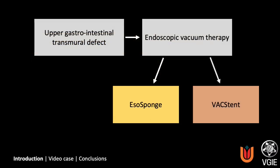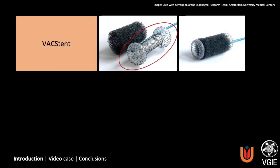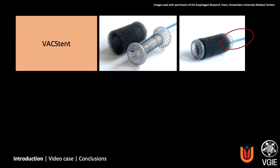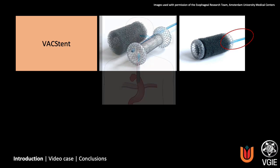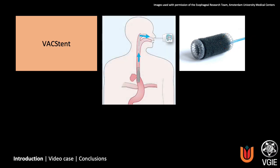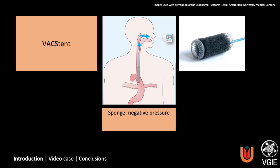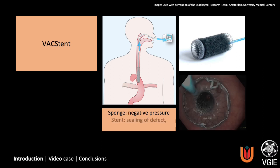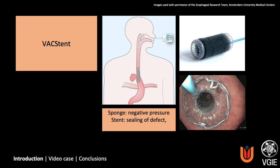Recently, the VaxStent was introduced as a new treatment option for these defects. The VaxStent consists of a covered nitinol stent with a polyurethane sponge attached to the outside and a suction catheter. After intraluminal placement, the suction catheter is attached to a vacuum pump, creating negative pressure at the site of the defect. The VaxStent combines the benefits of negative pressure therapy via the sponge with sealing of the defect via the stent. The negative pressure additionally keeps the VaxStent in place while the esophagus remains open, allowing for oral intake.